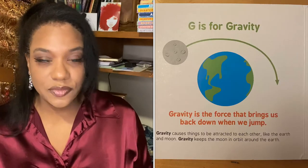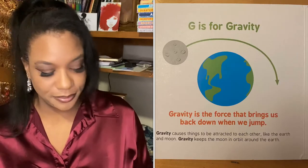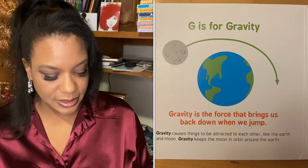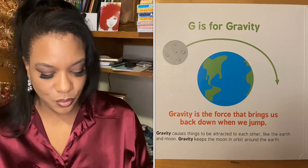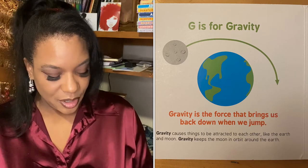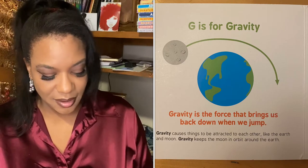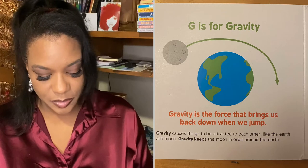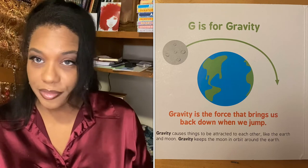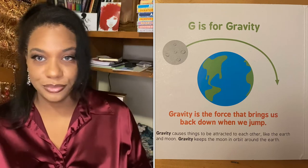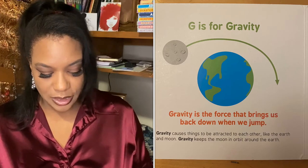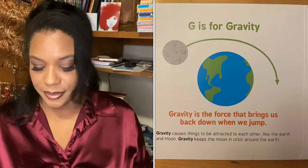G is for gravity. Gravity is the force that brings us back when we jump. Gravity causes things to be attracted to each other, like the earth and moon. Gravity keeps the moon in orbit around the earth.